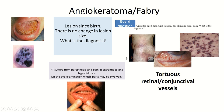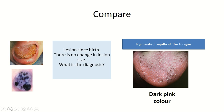Another important question on Fabry disease: tortuous conjunctival vessels can be found on the palpebral and retinal areas of the eye. An important differential diagnosis of angiokeratoma is pigmented papillae of the tongue, if the test maker doesn't mention dermoscopy, histopathology, or further findings in the history.